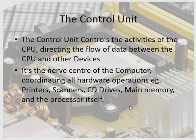The control unit controls the activities of the CPU, directing the flow of data between the CPU and other devices. There needs to be a control mechanism so that one device at a time can communicate with the CPU. It is the nerve center of the computer, coordinating all hardware operations — for example, printers, scanners, CD drives, main memory, and the processor itself.